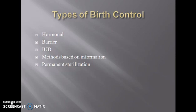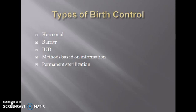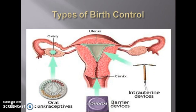Hormonal methods talk about drugs based on hormones — birth control pills and injectables. Barrier methods are methods that prevent spermatozoa from getting to where fertilization will take place. The IUCD — intrauterine device — is put inside the uterus and prevents pregnancy. Methods based on information involve knowing your menstrual cycle and your ovulation times. Permanent sterilization is majorly surgical — tubal ligation, vasectomy — these are all permanent sterilization methods.